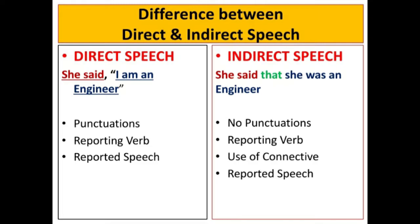What are the important elements of indirect speech? 'She said that she was an engineer.' Here, there are no punctuations, the reporting verb is changed, a connective is used, and in the reported speech, changes are made to pronouns and tense. In all, the features of indirect speech are: no punctuations, change of reporting verb, use of connective, and changes in pronoun, tense, and common changes.